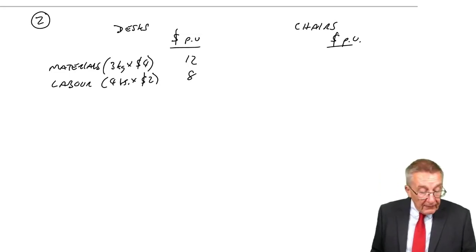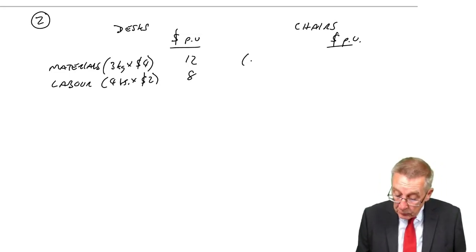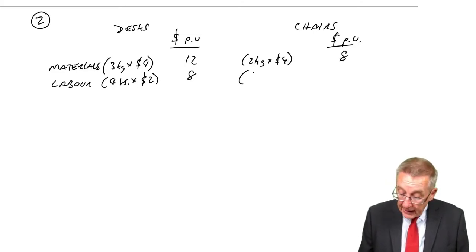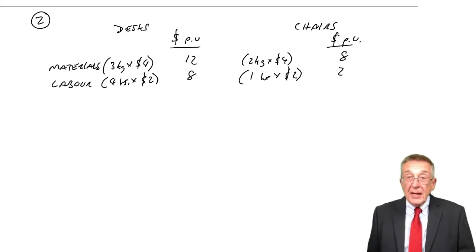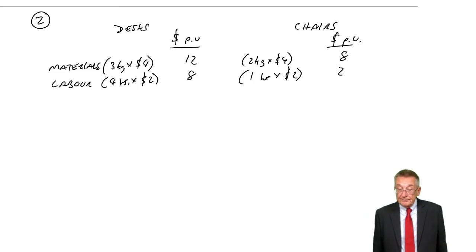With the chairs, each chair uses two kilos of wood at $4 is eight, and it takes one hour of labour at $2 is two. So again, no problem.